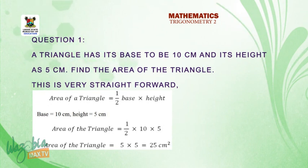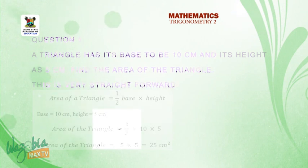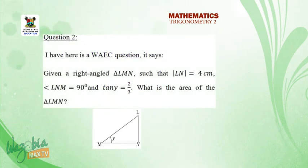This one is very straightforward. The area is equal to half base times height. That is, the base is 10. Half of 10 times the height, which is 5. So that would be 5 times 5, which is 25 cm squared.